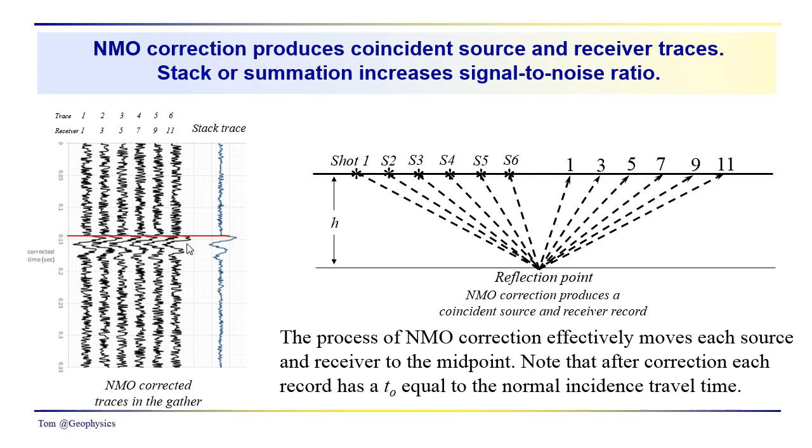It's hard, at least as an introduction, to discuss some of the additional issues associated with NMO. We're going to probably get some stretching that has to be compensated for, but we're just going to assume we don't have any stretching in these traces, and that the sum gives us a nice higher signal-to-noise ratio view of the reflection event off this surface.